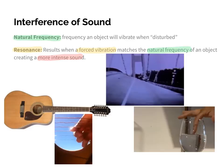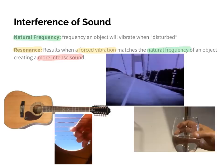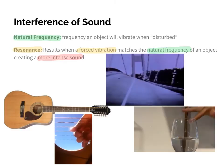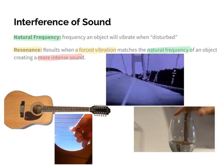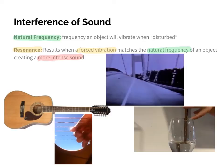As the water level goes down, notice the higher frequency. Taking another drink lowers the water further and changes the sound again. What's happening is the forced vibration of the finger on the rim matches the natural frequency of the glass, causing the air column to vibrate. As the water level went down, we had higher frequency — we're looking at interference of sound based on natural objects.